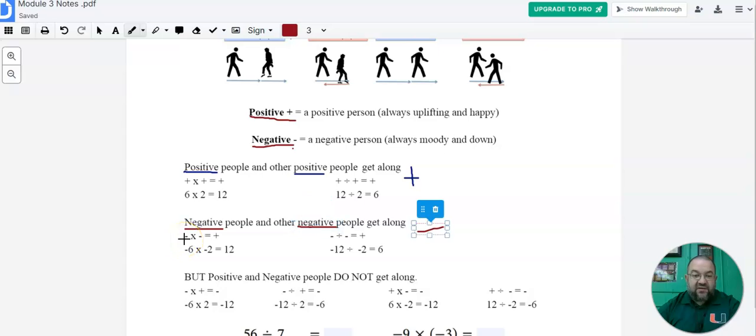So anytime that you have a negative times a negative, well, guess what? You are also going to get a positive. Always, always, always. A negative times negative is always positive. So for example, if I had negative 6 times negative 2, I'm going to get positive 12. Negative 12 divided by negative 2 is positive 6. So again, make this very clear. A negative and a negative is always positive. And a positive and a positive is always positive.